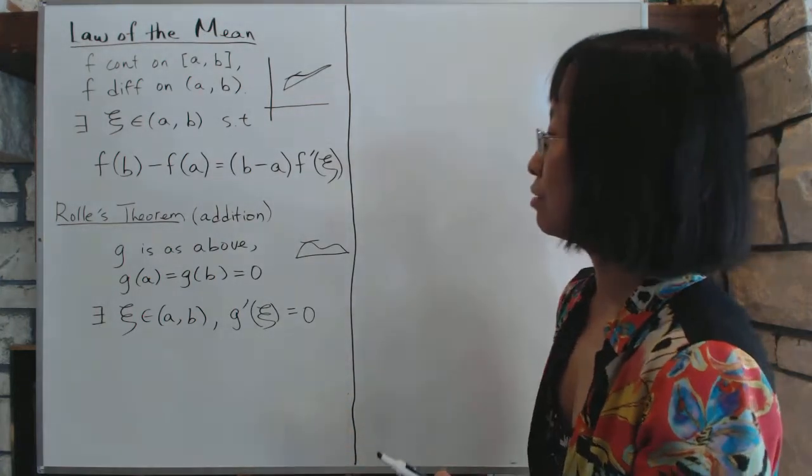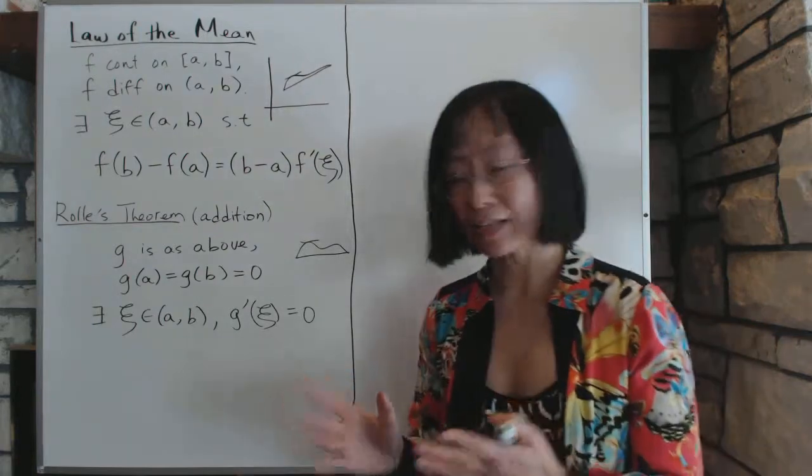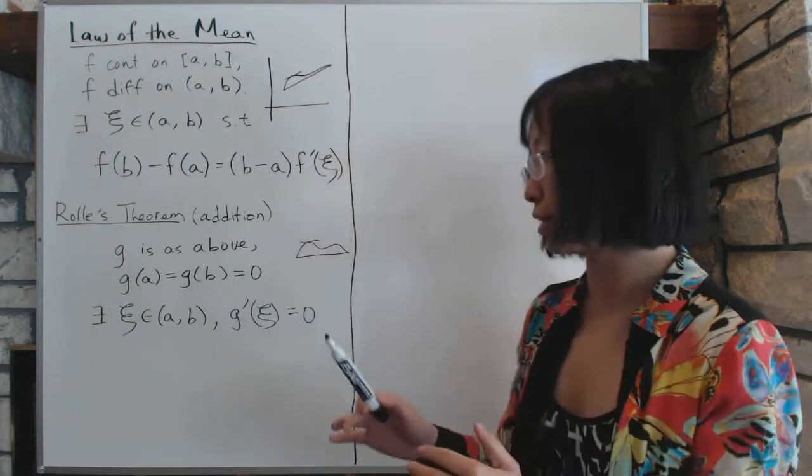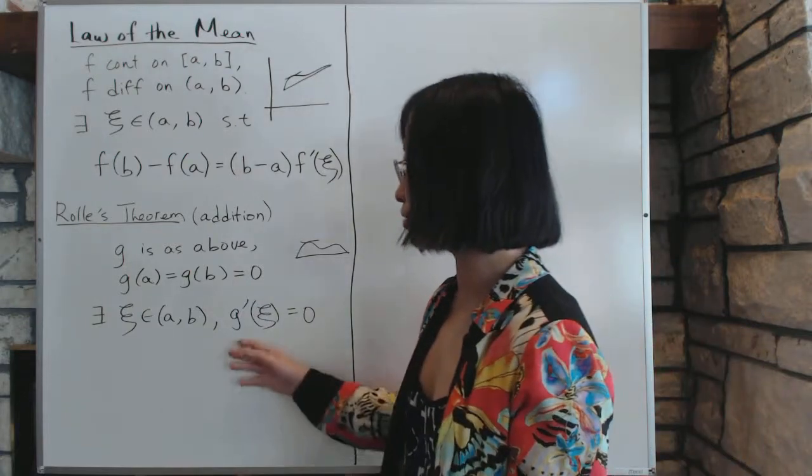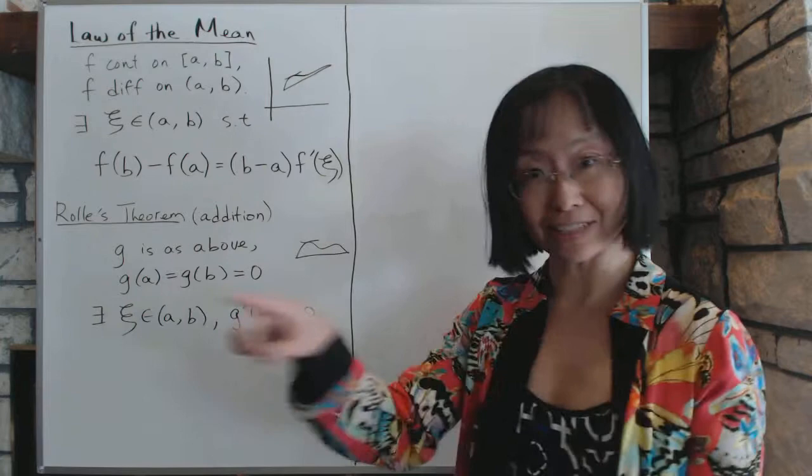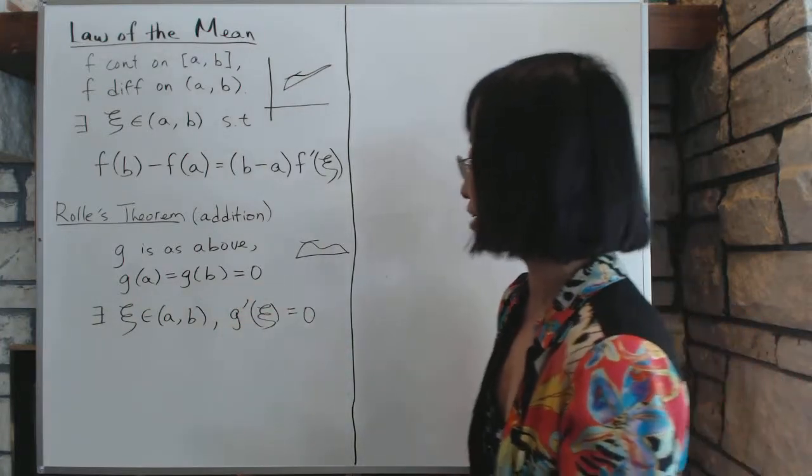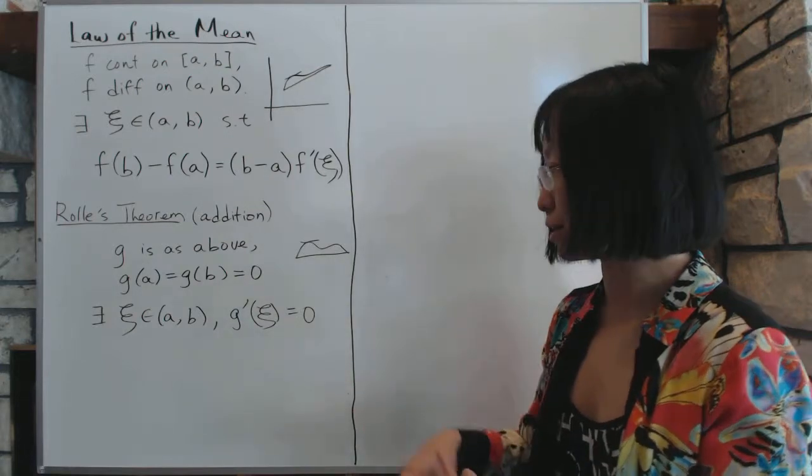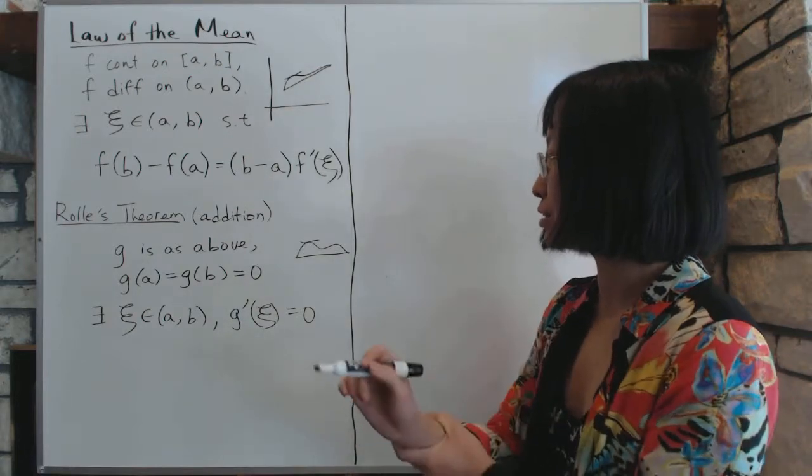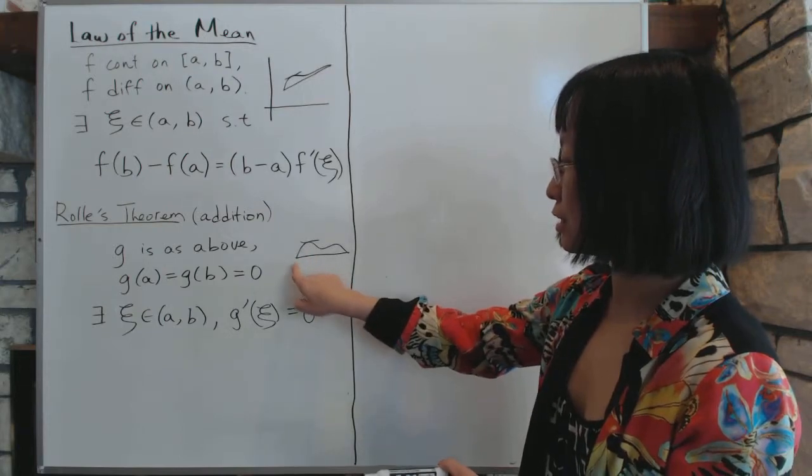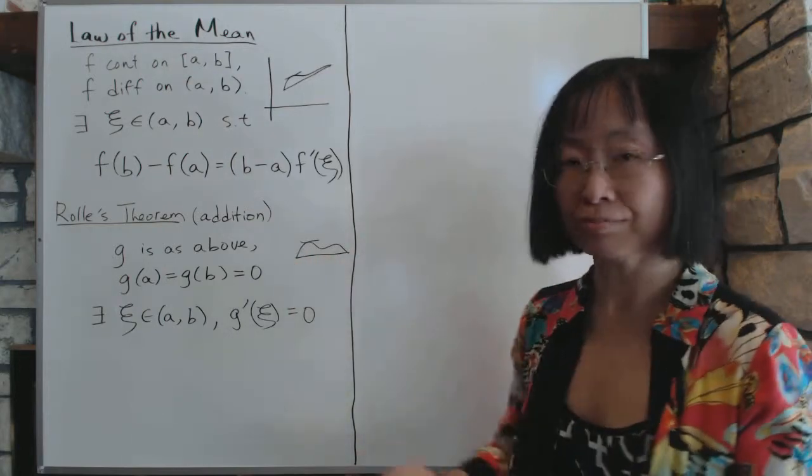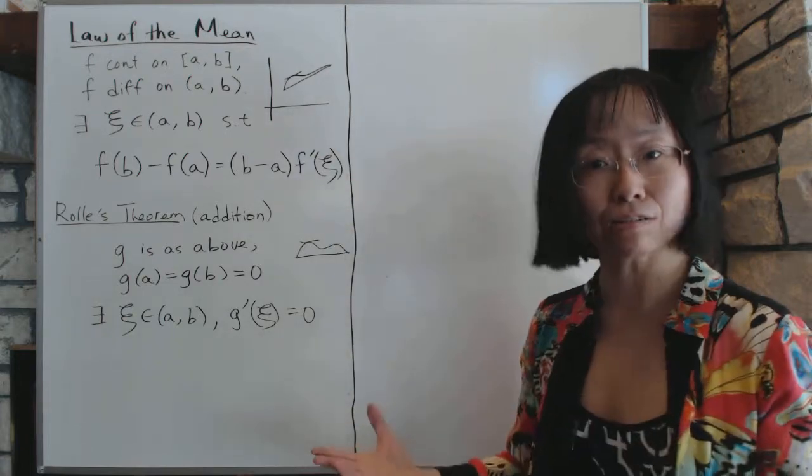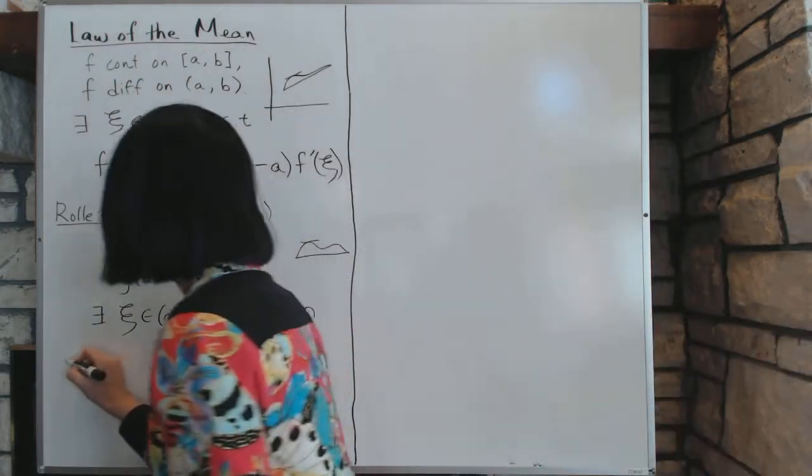Now the proof of Rolle's theorem. We argue first that let's say that g is completely zero everywhere. If g is completely zero, then obviously g' is going to be zero too. It's just a flat line all the way around. And that's not very interesting. So we will assume that g is at least not zero at some point. If it's not zero at some point, being that g starts at zero and ends at zero, it must have some kind of relative maximum or minimum that doesn't equal zero. So here's what we'll write down. Proof.